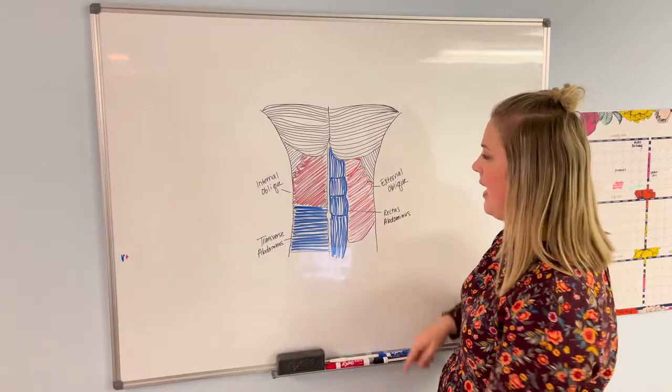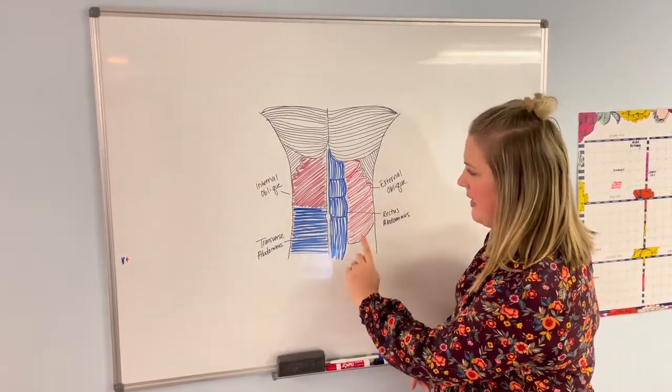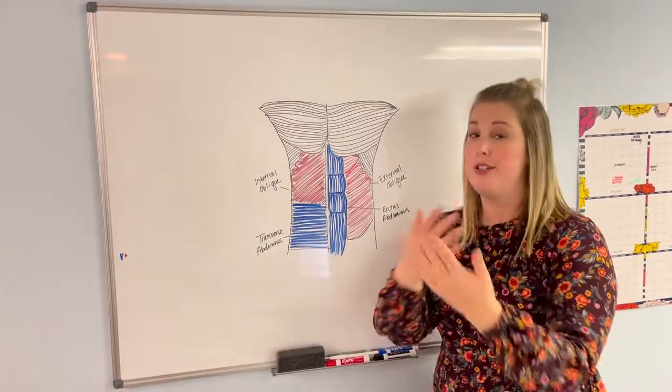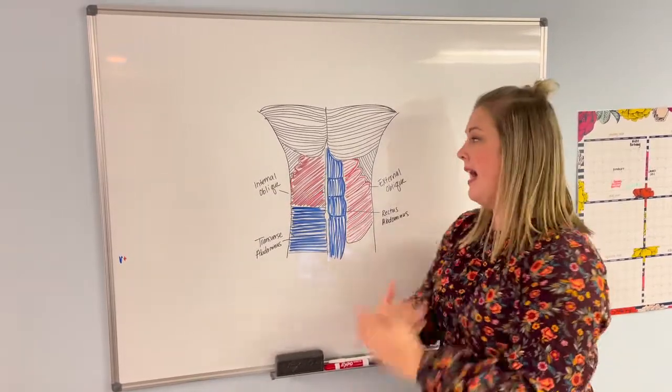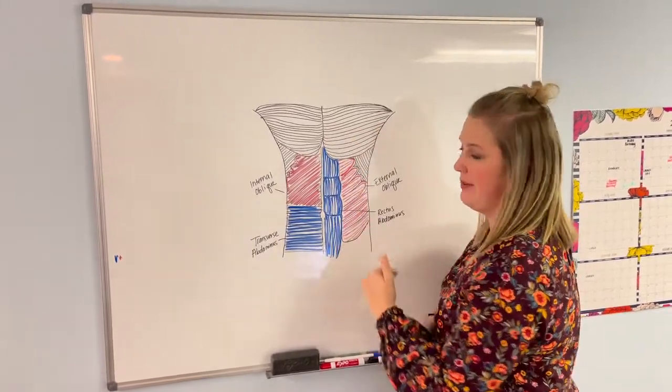Then deep to that are your two obliques. External oblique is shown here and internal oblique is shown here. They essentially crisscross on each other underneath and run from ribcage all the way down to the pelvis.